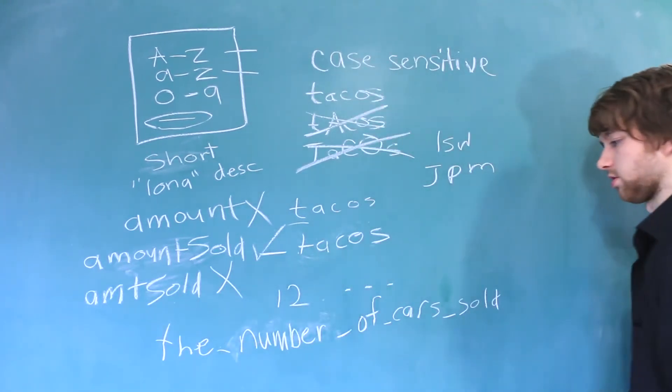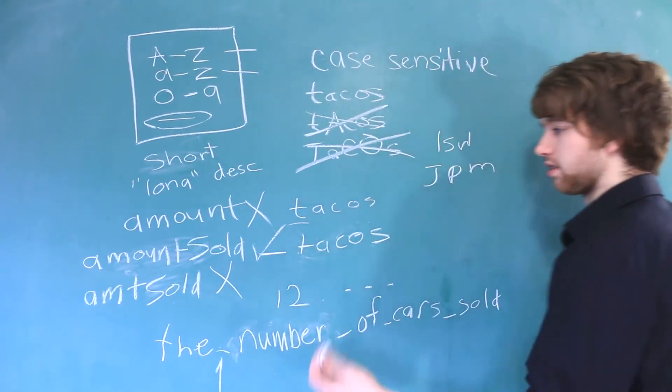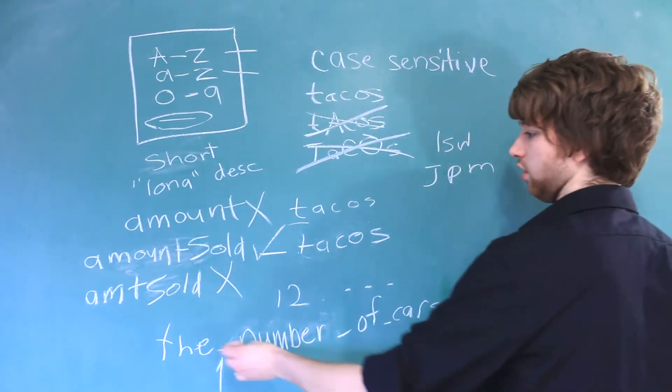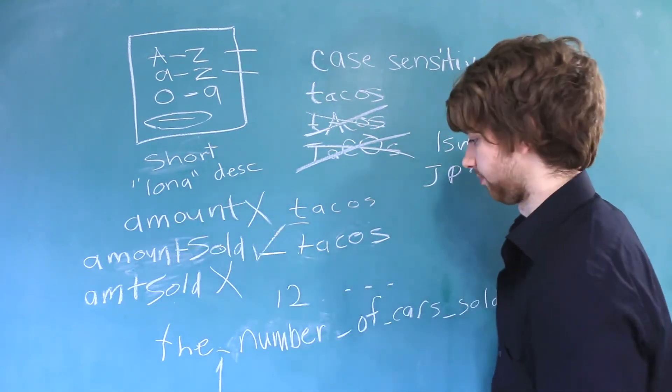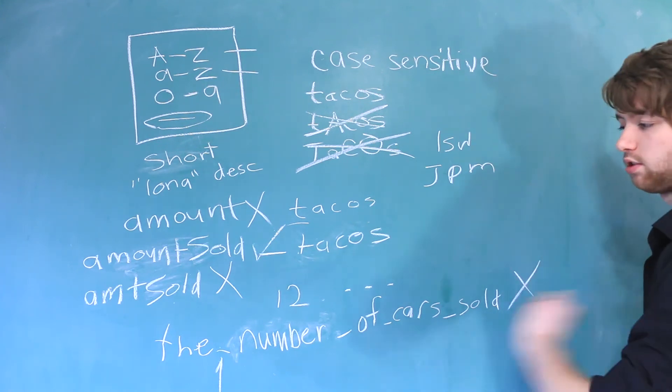What about this one? The number of cars sold. The underscores are perfectly acceptable. Some people prefer that naming convention over using capital letters or camel casing. But I generally would say this is a bad variable name. It's too long. It's too easy to misspell.